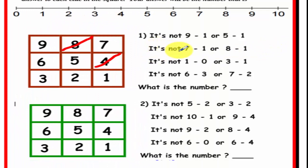Welcome back, let's see how well you did. It's not 7 minus 1, here's 7 minus 1, you should have had 6. 8 minus 1 is 7. It's not 1 minus 0, well you can't take 0 from 1, so it's not 1. It's not 3 minus 1, so that's 2. It's not 6 minus 3, that's 3, and it's not 7 minus 2, and that is 5. So the number left would be the number 9.